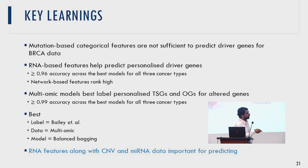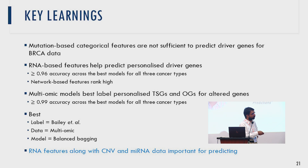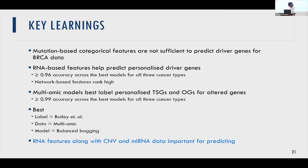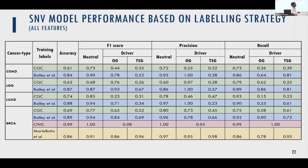We found that mutation-based categorical features alone are not sufficient to predict driver genes — transcriptomic data was very important. Network-based features were also highly useful in informing predictions. Ultimately, using multiomic data we achieved as much as 99% accuracy for the best models across three different cancer types. The key takeaway is that one must not stop with genomic data but also look at RNA and other network data whenever possible.